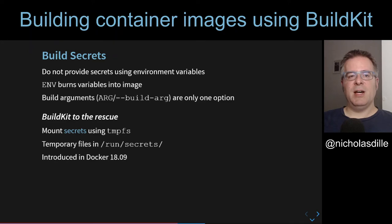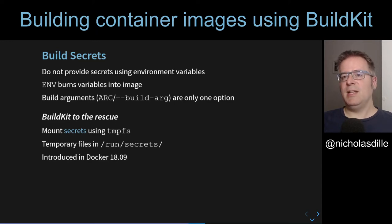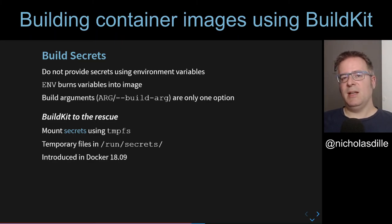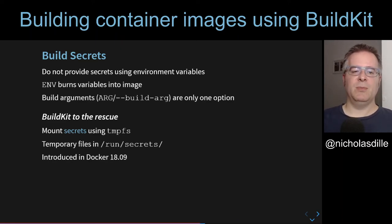If you need to rely on some kind of secret during a build, there are some ways how not to do it. You should never ever use environment variables, especially not an ENV directive in the Dockerfile, because that ENV directive burns a variable into the image. Whenever you execute something in that image, for example do an exec into the image, those variables will be available, meaning that you have automatically leaked the secret into the image and thereby lost control over your secret. One option is using build arguments, but BuildKit offers a different way which provides a bit more control over the secret.